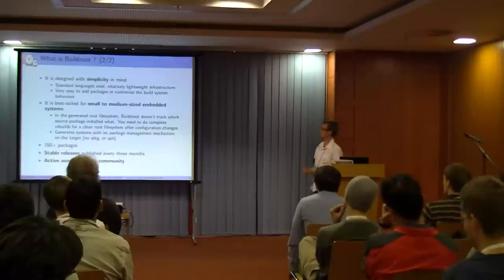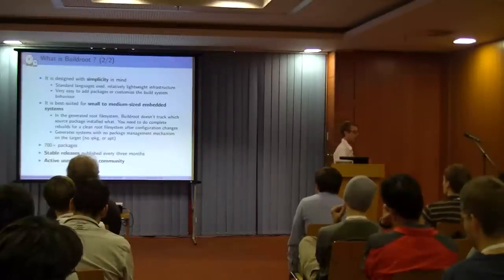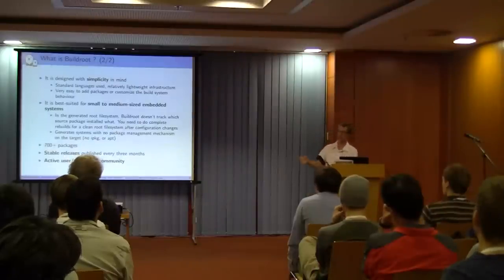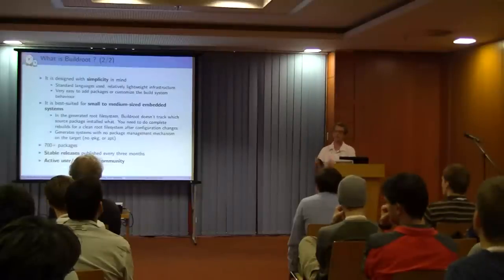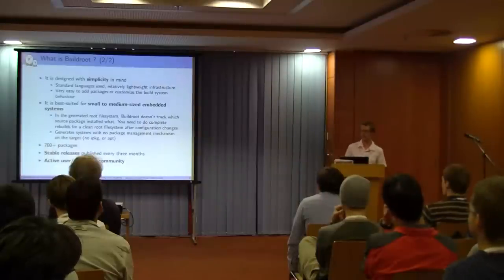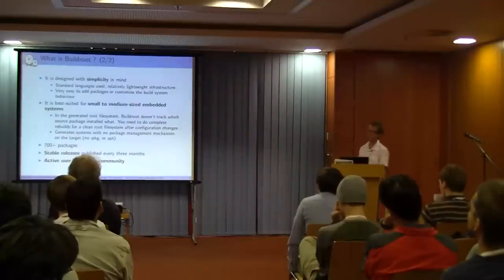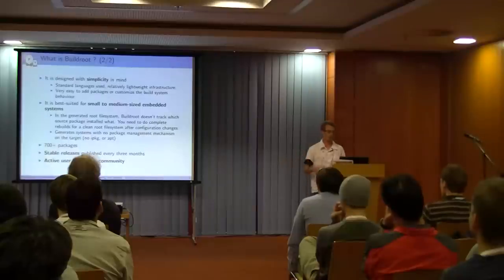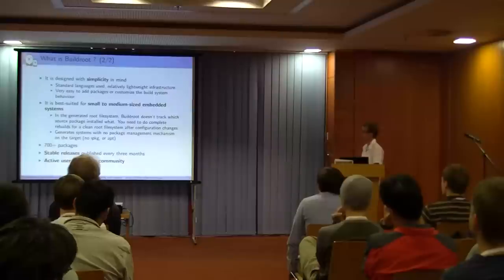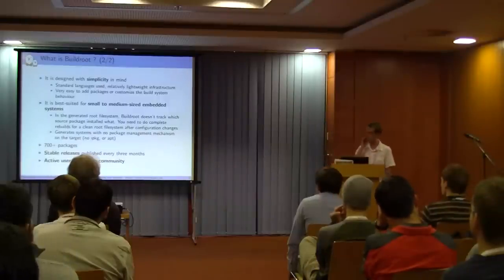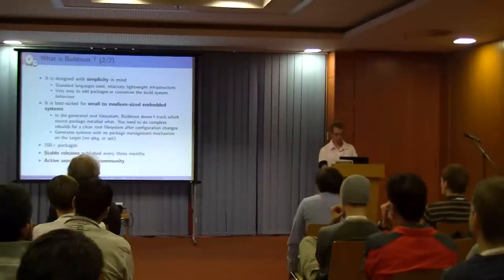BuildRoot generates a system without any package management mechanism — no IPKG or APT. It generates a final root filesystem image you flash on your device. If you want modifications, you go back to the tool, add or tune things, and regenerate. It has around 700 packages including X.org, Qt, GTK, and many networking-related things. Stable releases have been published every month for almost three years, with an active user and developer community.